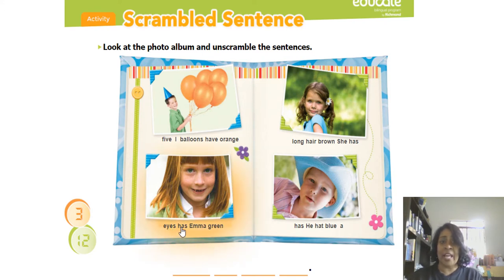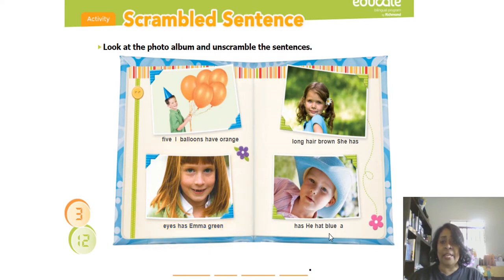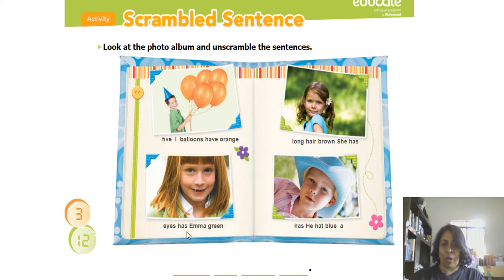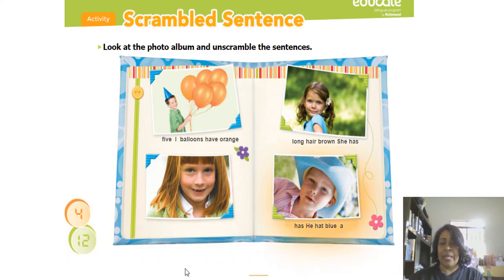Aqui eu tenho: Emma has green eyes. Tá vendo o 'has' aqui novamente? Porque é ela — she. Emma é she. E depois: he has a blue hat. Então, vamos colocar na ordem: Emma has green eyes. Emma tem olhos verdes. Próximo: ele tem o chapéu azul. E a girl: she has long brown hair. Ela tem longos cabelos castanhos.